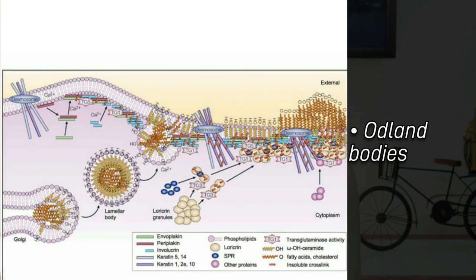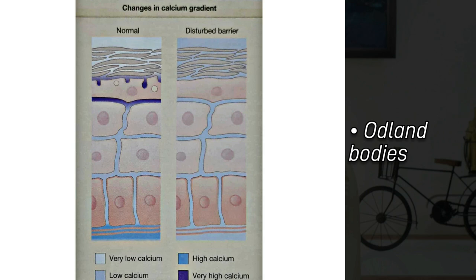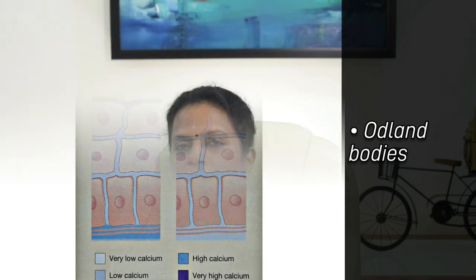Before going into each step, there are some bodies which help in keratinization — Odland bodies, otherwise known as cementosomes, membrane coating granules, lamellar granules, or lamellated vesicles. They are lamellated in structure and are usually seen in the upper stratum spinosum near the Golgi apparatus, from where they move to the cytoplasm. In stratum granulosum, they move towards the apex of the cells and gradually secrete their contents at the stratum granulosum–stratum corneum interface. For this to happen, a calcium gradient is required — calcium is low in stratum basale, very low in spinosum, highest in granulosum, and virtually absent in stratum corneum.